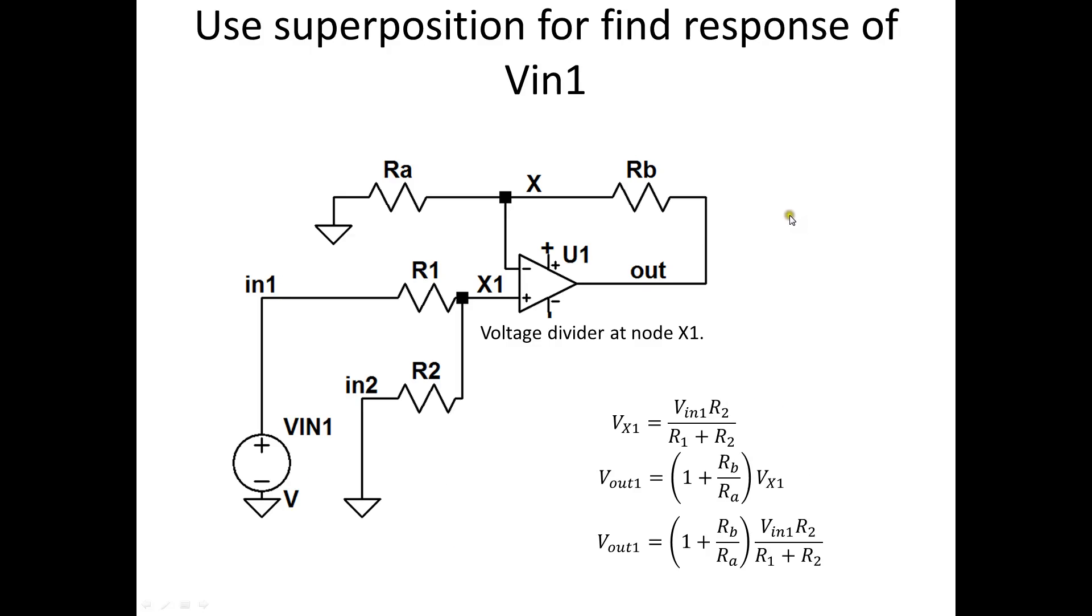Let's use our friend superposition. We short this input. Previously when we shorted an input on the inverting amplifier, that value of resistance didn't affect the other input's response. But look, I have the input voltage here, and now this is not at zero volts.